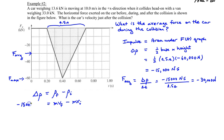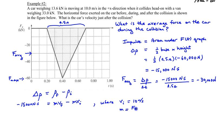We'll substitute in the initial velocity of 10 meters per second to the right. We need one more piece of information: the mass of the car. The car is given as 13.6 kilonewtons, but we need the mass. Mass is found using the force of gravity divided by g: 13,600 newtons divided by 9.8 m/s², which gives a mass of approximately 1,388 kilograms.